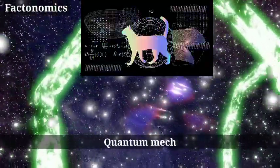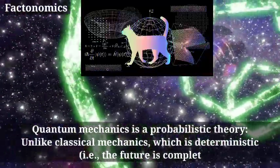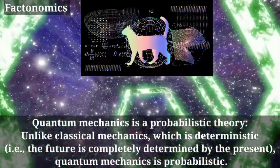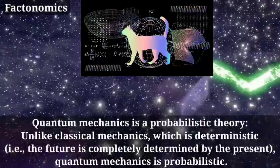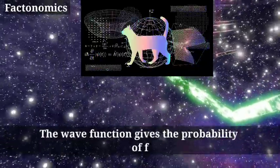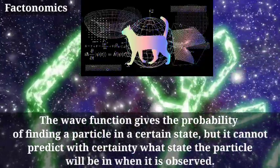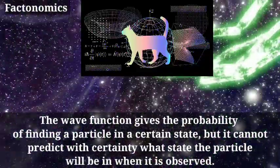Fact number 8. Quantum Mechanics is a Probabilistic Theory. Unlike classical mechanics, which is deterministic, i.e., the future is completely determined by the present, quantum mechanics is probabilistic. The wave function gives the probability of finding a particle in a certain state, but it cannot predict with certainty what state the particle will be in when it is observed.